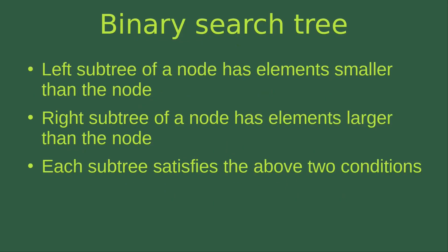So what does it mean by a binary search tree? A binary search tree has three conditions to follow. First, the left subtree of a node has elements that are smaller than the node. The right subtree of a node has elements that are larger than the node. Finally, each subtree satisfies the above two conditions. Then we can say that we have a binary search tree.